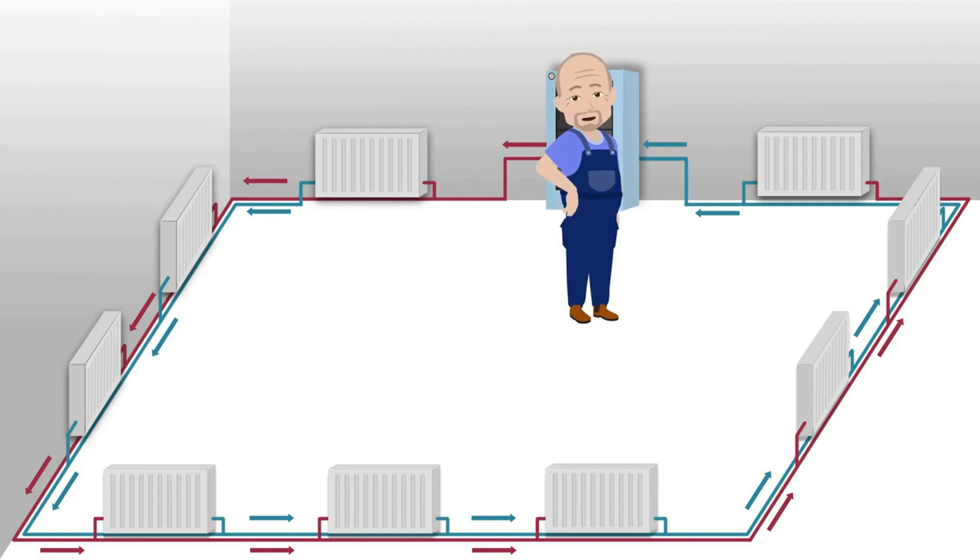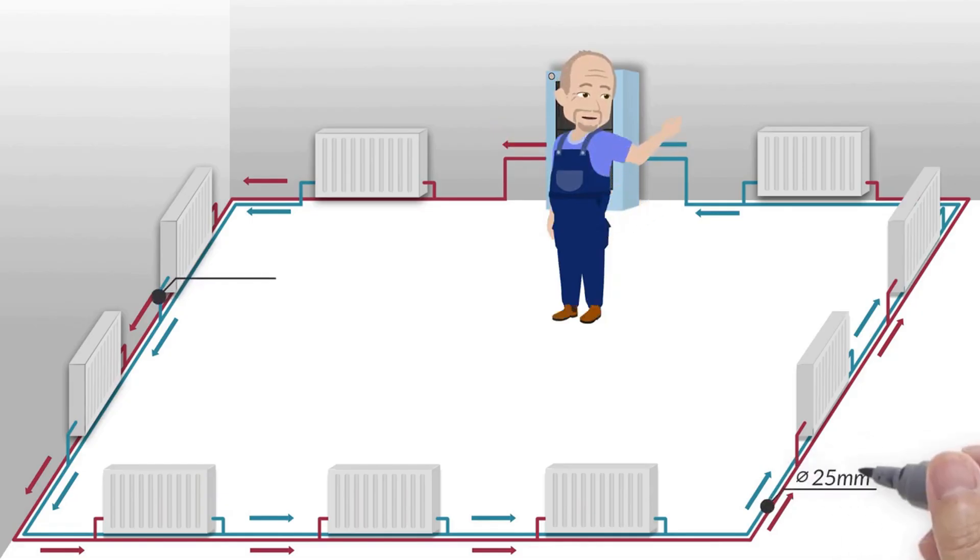But what's most interesting is that the return pipe starts from the last radiator. As a result, an interesting system like this is created. In it, the main supply and return pipes have a diameter of 25 millimeters and the radiator pipes are 20 millimeters.